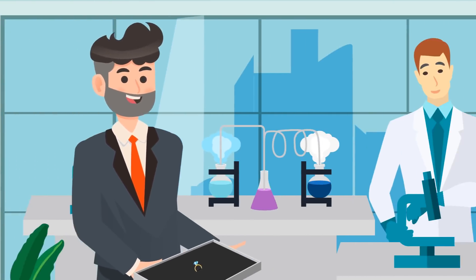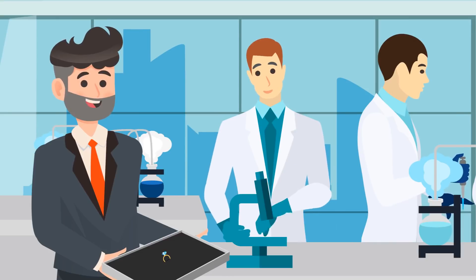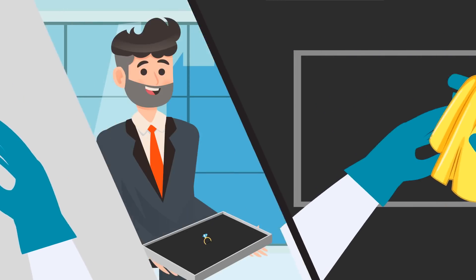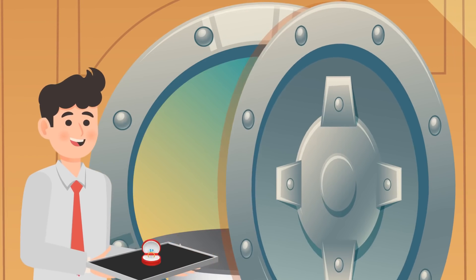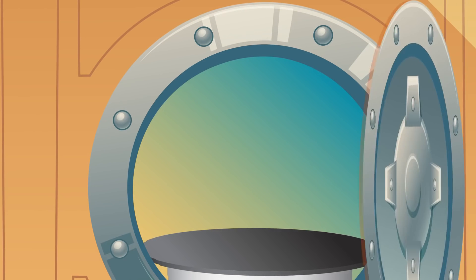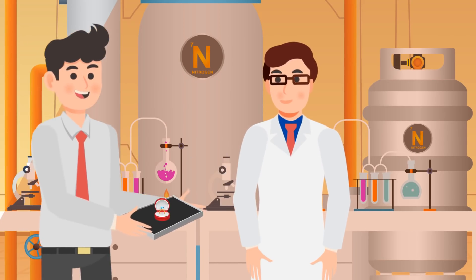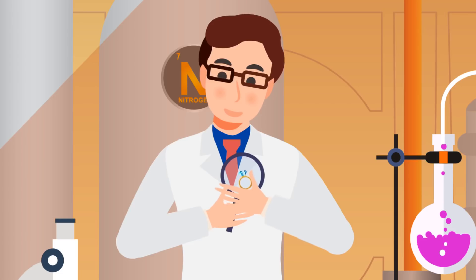Now Ronnie takes Jenny's ring to the following department. The representative prepares Jenny's diamond ring for an advanced inspection. The ring is ready to enter the lab. This is Isaac, our gemologist, who will check Jenny's diamond ring.